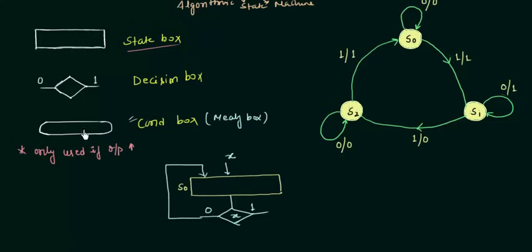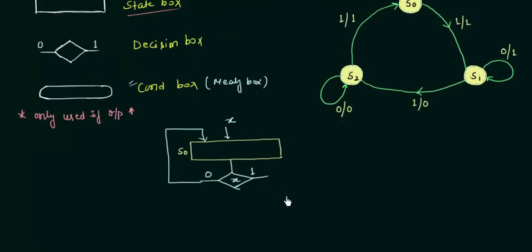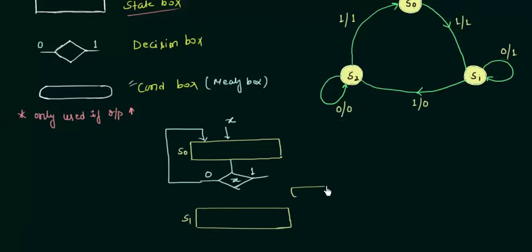We use the condition box only when the output is high. When input is equal to 1, we move from S0 to S1 with output equal to 1, so we need a condition box here. We also make another state box for S1, and draw the transition from S0 to S1. Z is the output. So we are done with state S0.